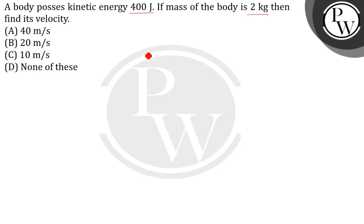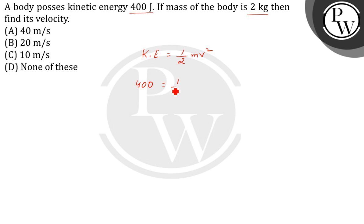We know the formula for kinetic energy equals half mv squared. We'll put the values here: 400 equals half into mass 2 into v squared.